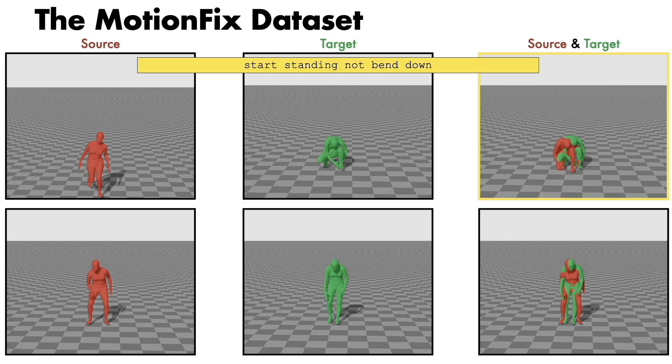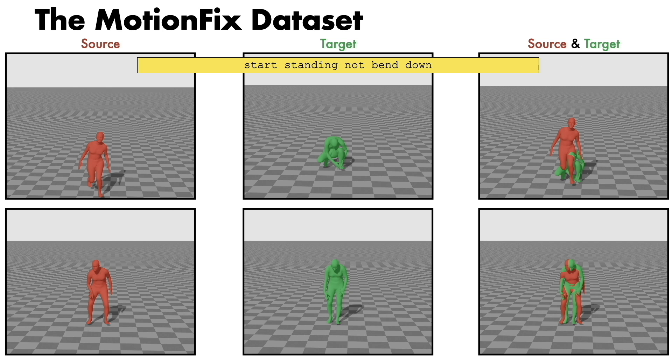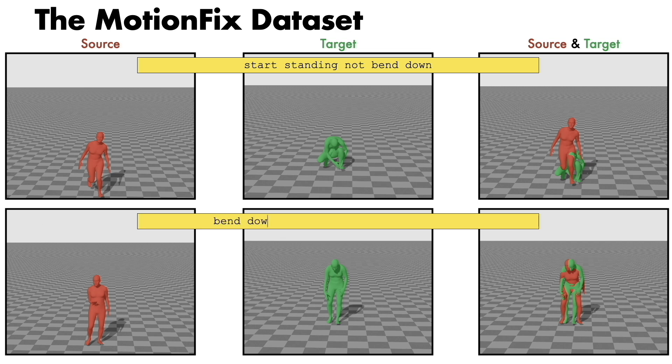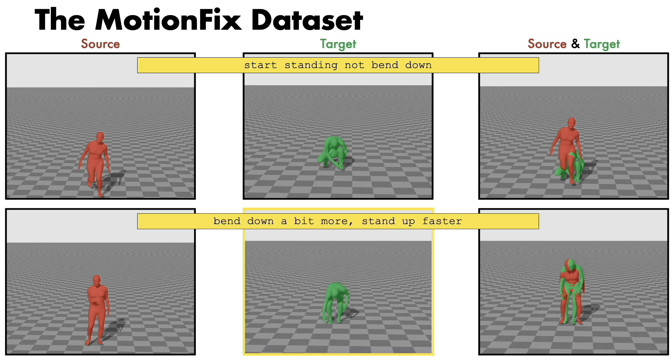The edit triplets also contain examples with mixes of spatial edits and speed edits, such as bend down a bit more, stand up faster.